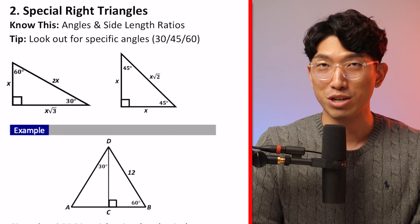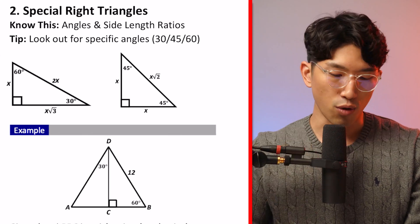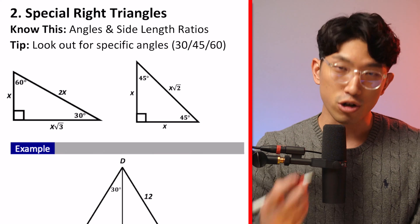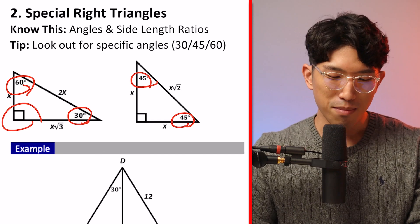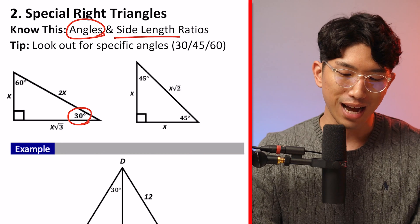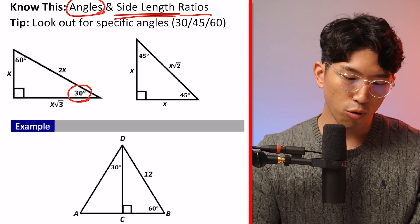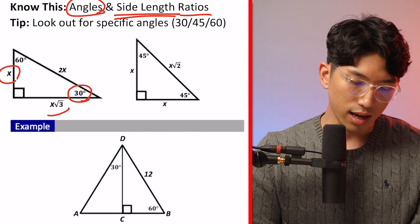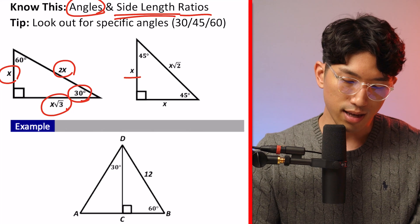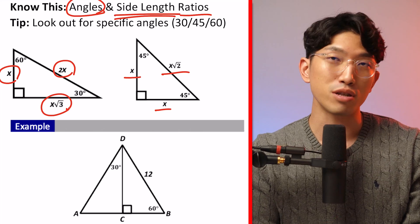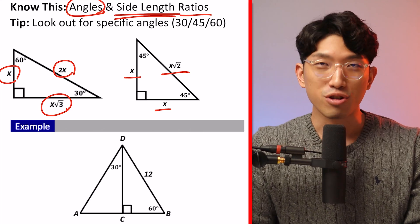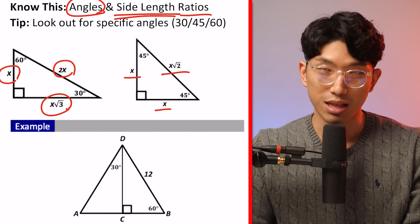Special right triangles are one of the most popular triangle topics on the SAT. There are two types: 30-60-90 triangles and 45-45-90 triangles. For a 30-60-90 triangle, the side length ratio is X, X√3, and 2X. For a 45-45-90 triangle, it's X, X, and X√2. You definitely want to memorize these because, even though the SAT provides them on the first page, you don't want to waste time going back and forth between the formulas. More importantly, each side length ratio is specifically tied to certain angles — X goes with 30, X√3 goes with 60, and 2X goes with 90.